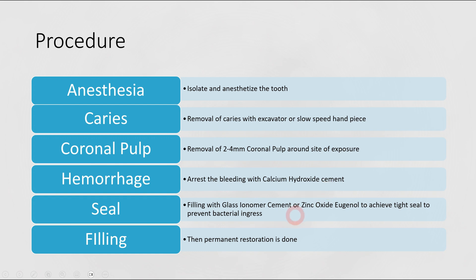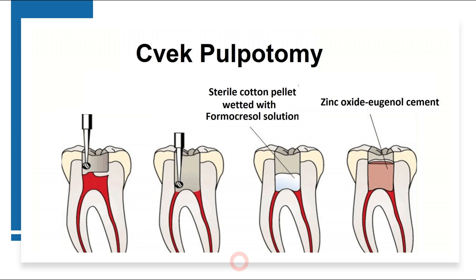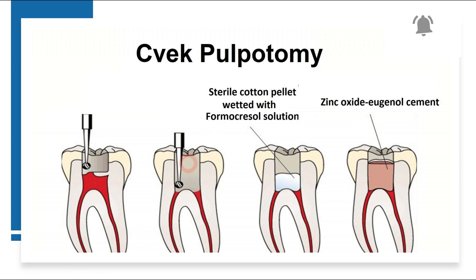After placing the calcium hydroxide cement, we then go for temporary filling with either glass ionomer cement or zinc oxide eugenol, which provides a tight seal so that bacteria do not ingress into the root canal system. Finally, we go for permanent restoration, most commonly composite. This diagrammatic representation shows how Svex pulpotomy is performed: remove caries with a slow speed handpiece, place a sterile cotton pellet with parachlorophenol solution to help control bleeding, then place a calcium hydroxide barrier to prevent bacterial ingress, followed by zinc oxide eugenol cement and then a permanent restoration on top.